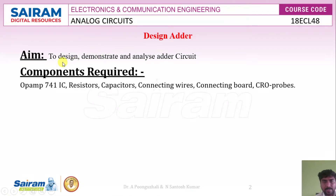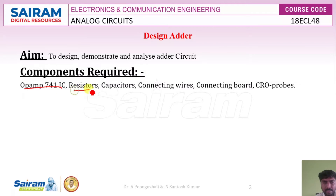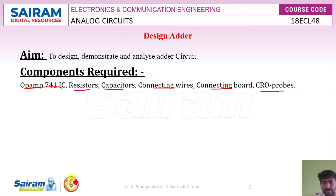The aim of the experiment is to design, demonstrate, and analyze an adder circuit. The components required for this are an op-amp 741 IC, resistors, capacitors, connecting wires, and a breadboard. We also need a CRO and its probes, a variable DC supply for connecting plus and minus V to the op-amp, and a DC supply for applying the inputs.